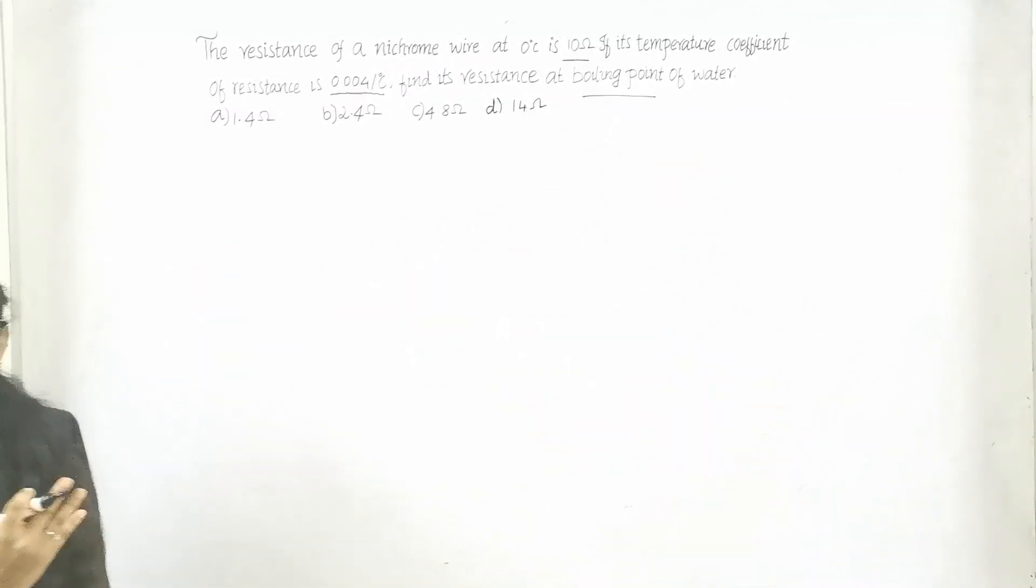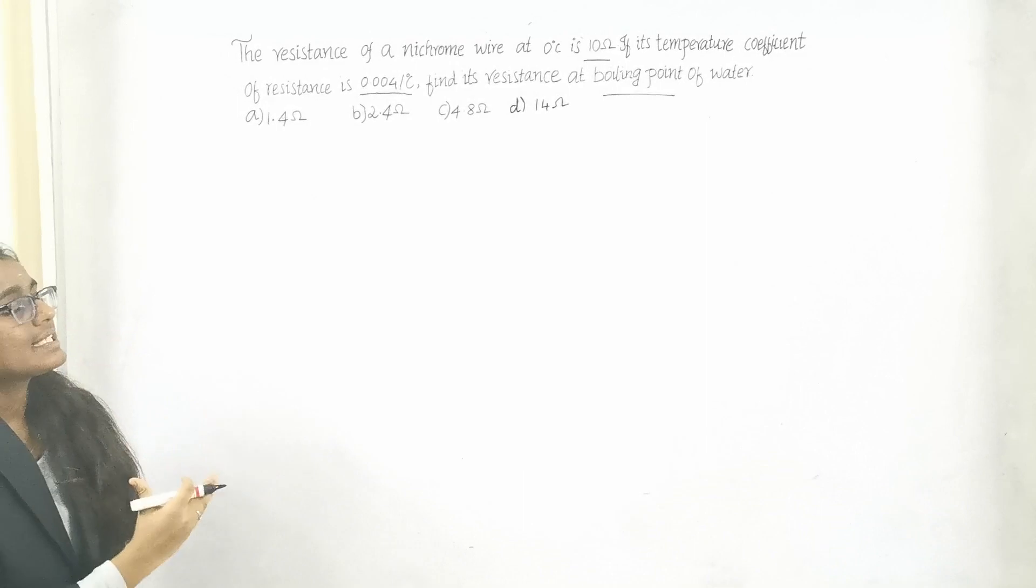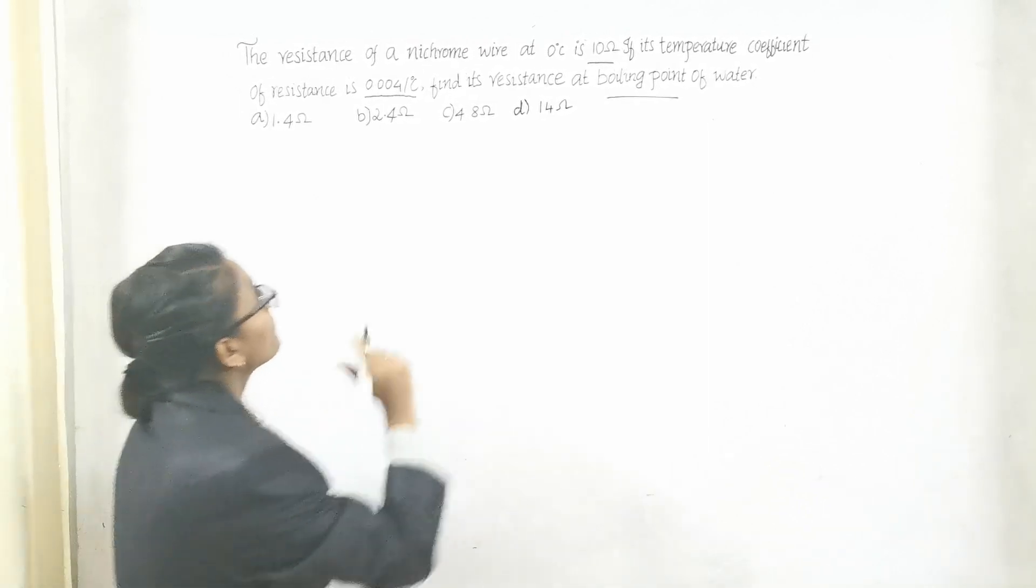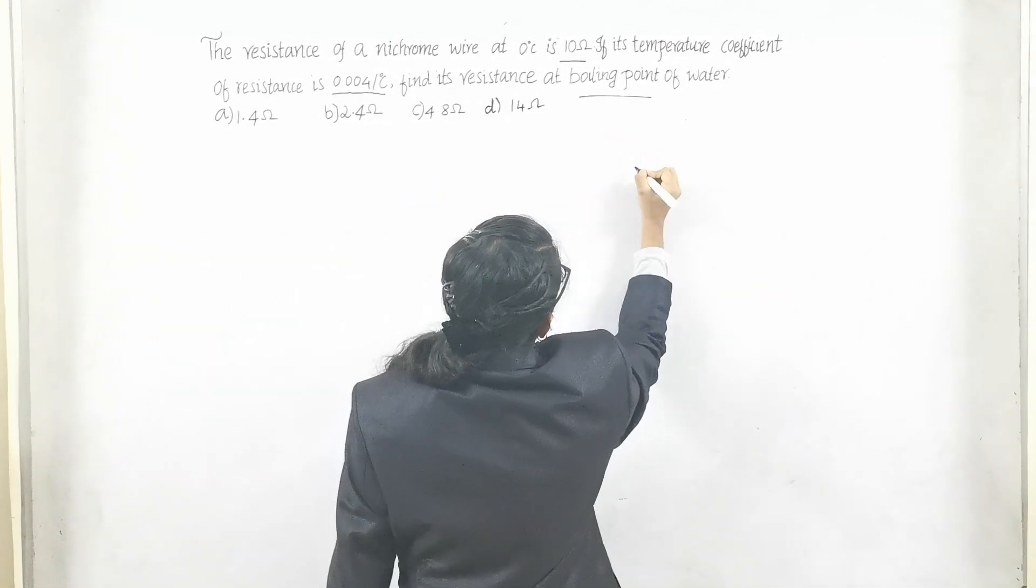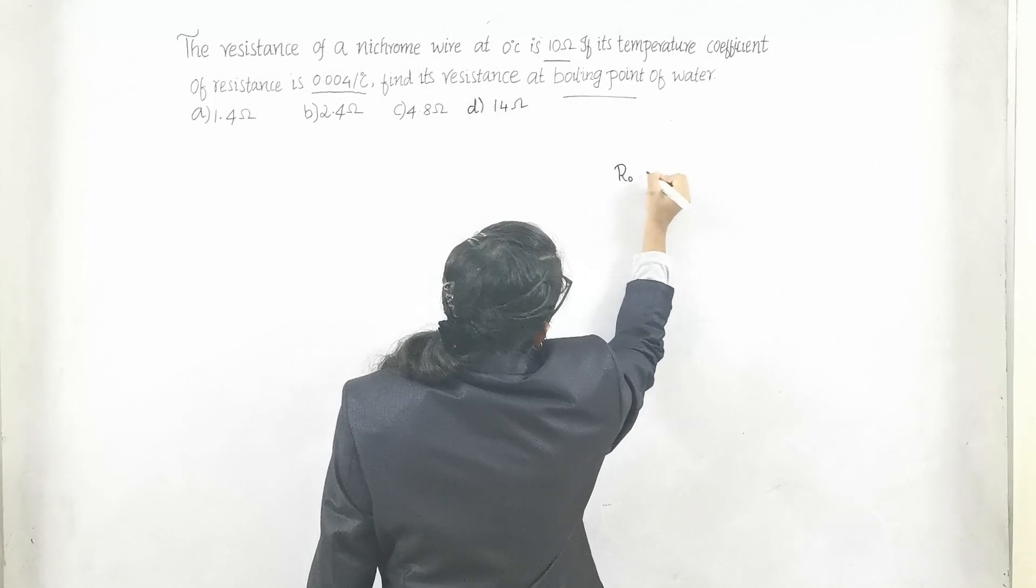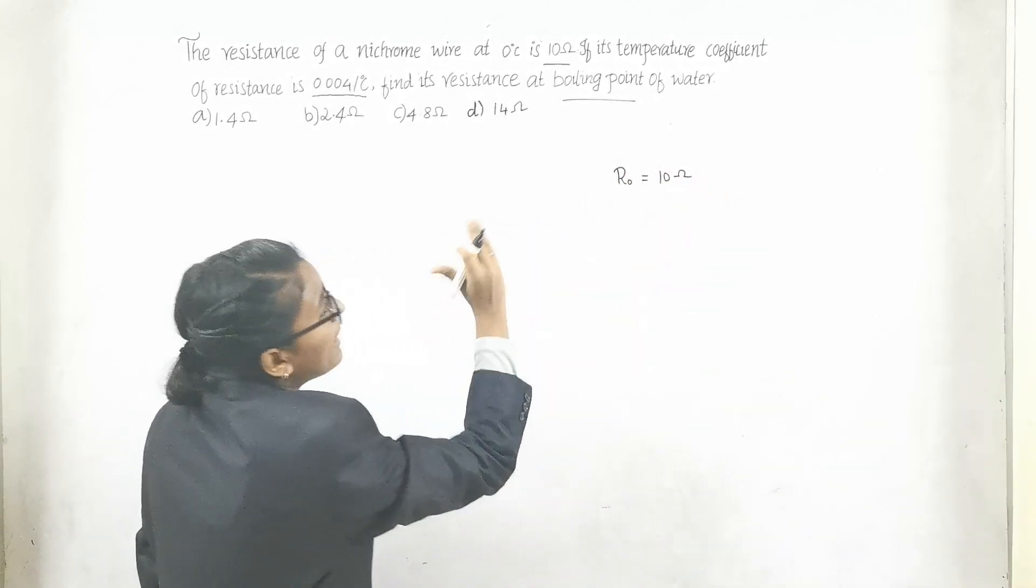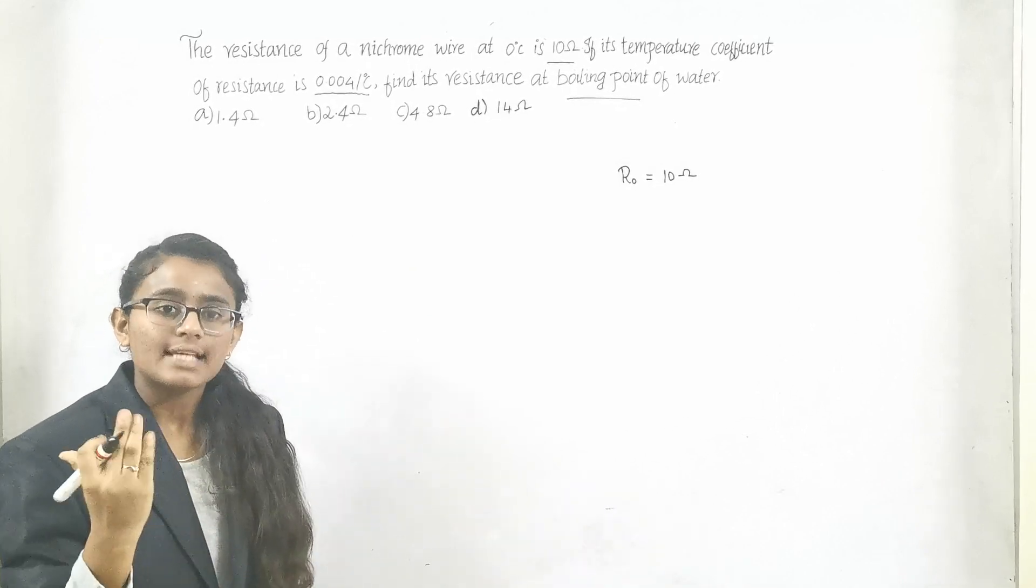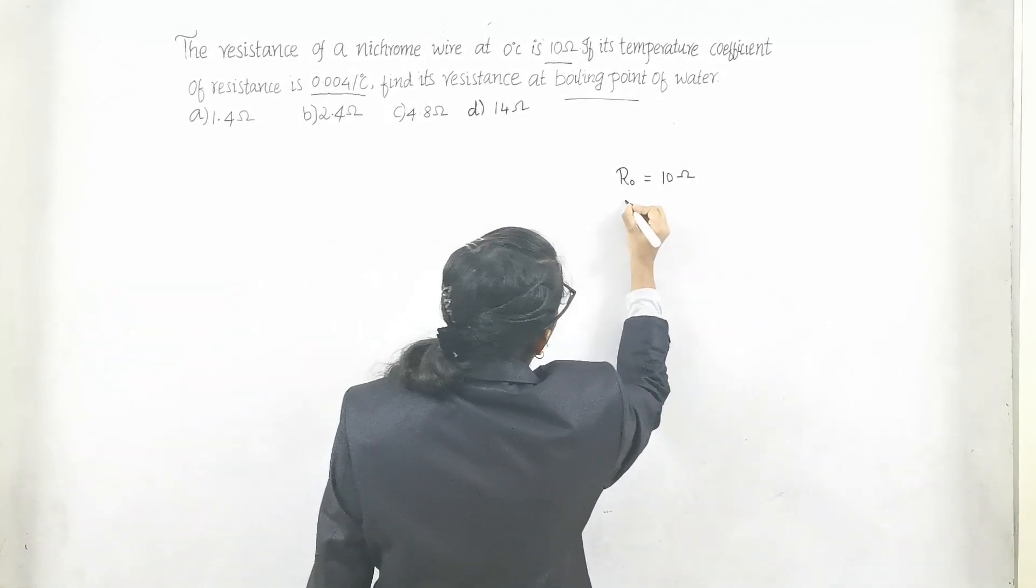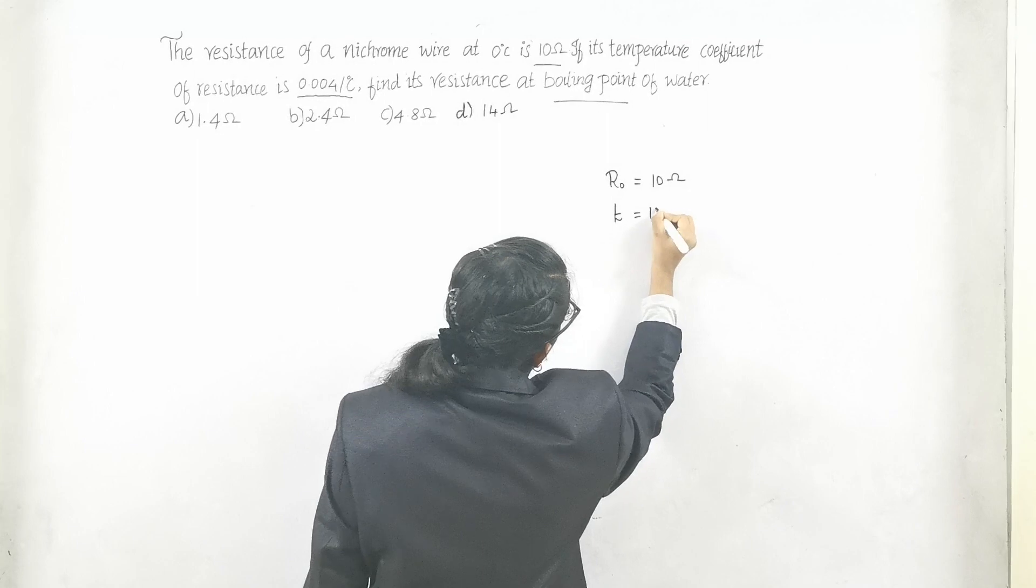Now let me write the highlighted points in terms of values. We have given resistance R₀ is 10 ohms, and temperature we know that it is 100 degree Celsius, T equals 100 degree Celsius.